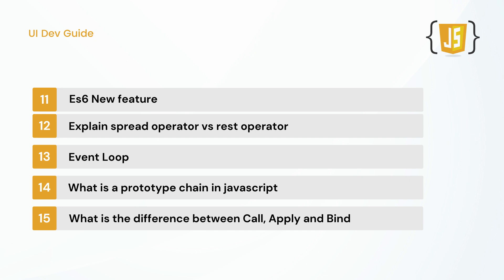The next question is related to event loop. What is the role of the event loop? When does it get triggered? Suppose you have a promise, a callback, a setTimeout, and an API call — which one has higher priority and gets the result first? You should know about callback queues, call stack, and microtask queue, as these are parts of the event loop. The event loop is kind of the heart of JavaScript, so interviewers will definitely ask you about it.